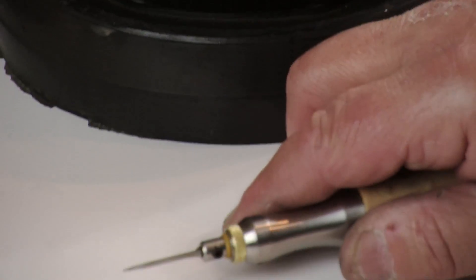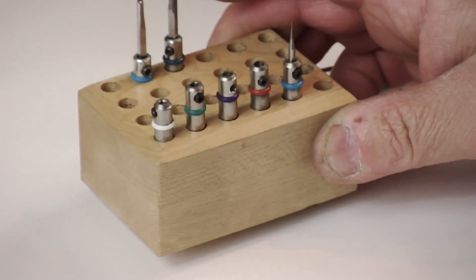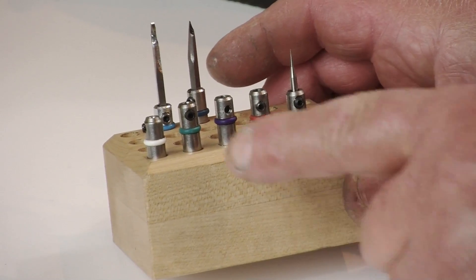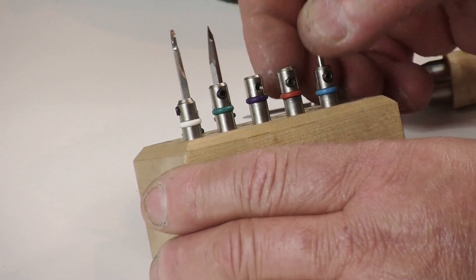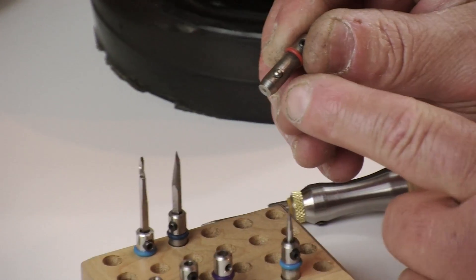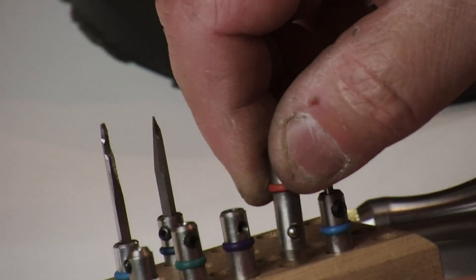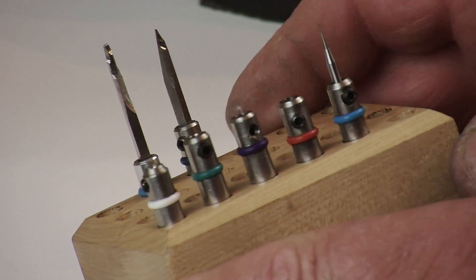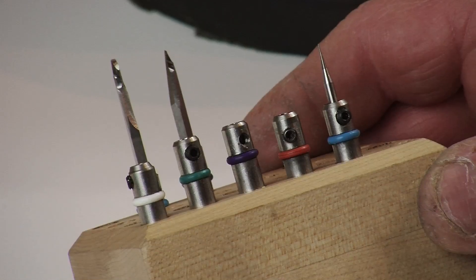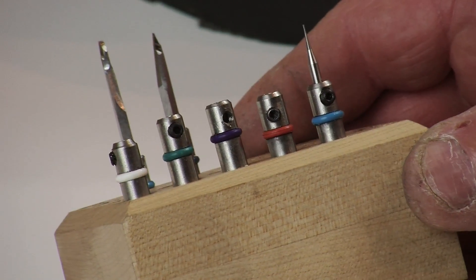It comes with a collet system. These are all stainless steel collets, and the collets themselves have a ball detent which holds the collet in place. This stop ring, which is an O-ring, comes in ten different colors.